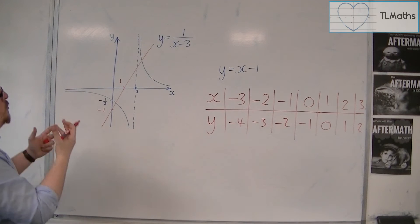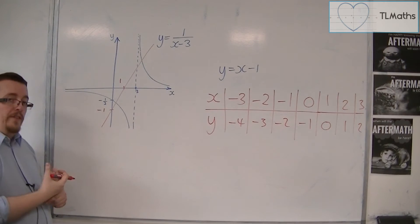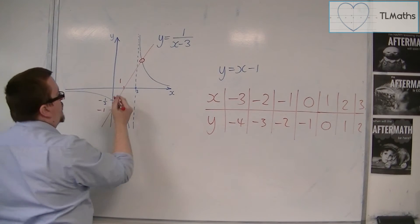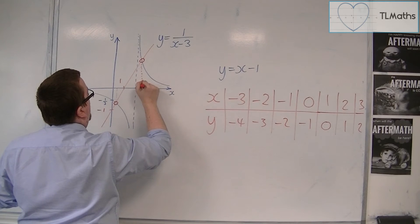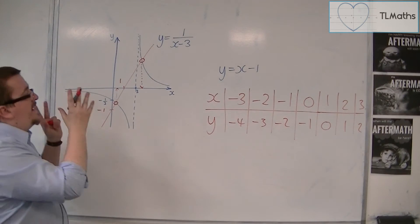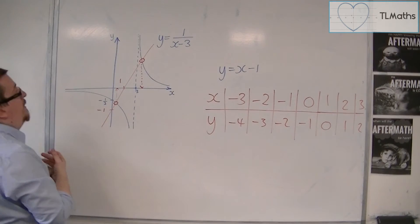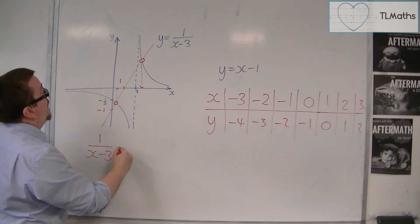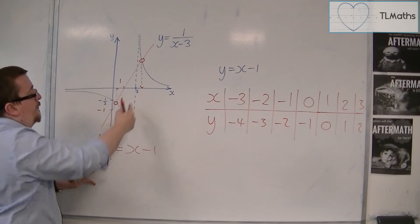And what we're trying to do is we're trying to estimate where these two intersect. Where does the curve and the straight line intersect? And they intersect with each other there and there. And what you can then do is you can read off the x value from both of these. And you will be able to get an estimate for the solution to putting this equation equal to that one.